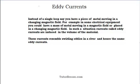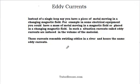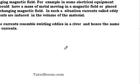Eddy currents. Instead of a single loop, say you have a piece of metal that moves in a changing magnetic field. For example, in some electrical equipment you could have a mass of metal that is moving in a magnetic field or that is placed in a changing magnetic field. In such a situation you have currents which are called eddy currents that are induced in the volume of the metal. These currents resemble swirling eddies in a river, and hence the name eddy currents.